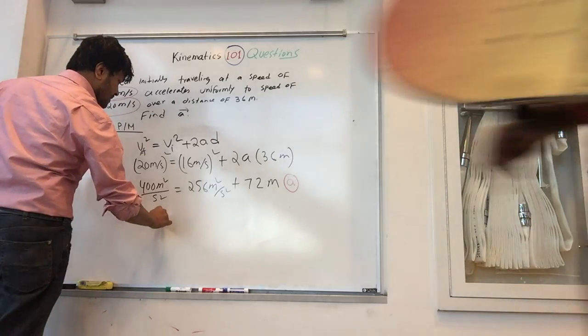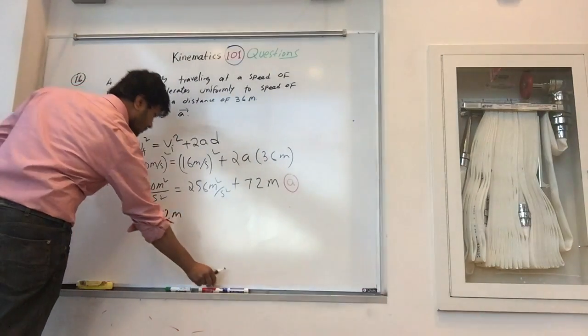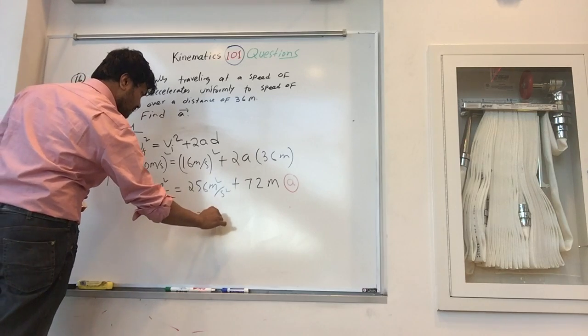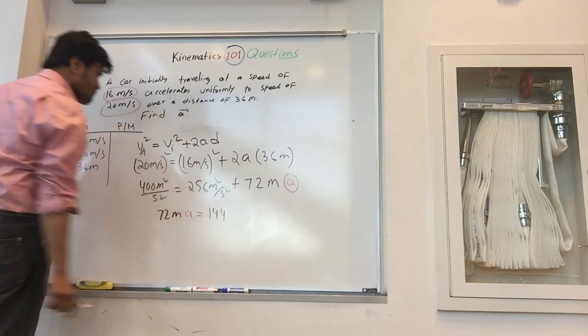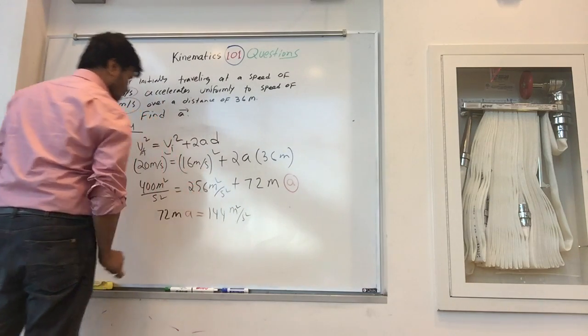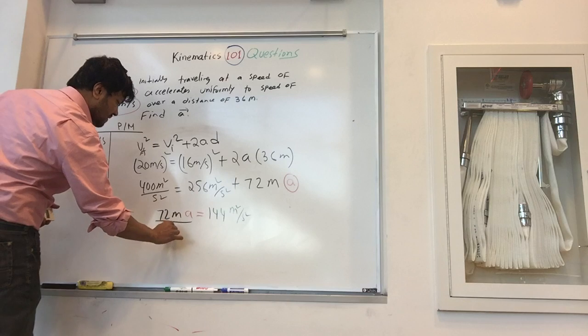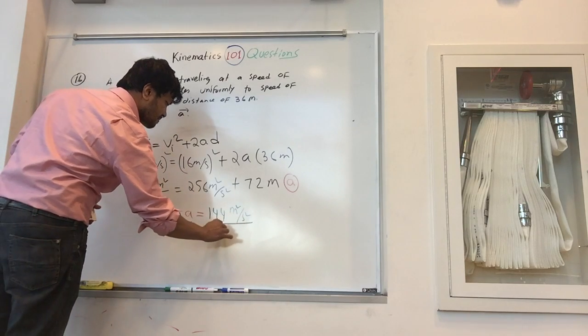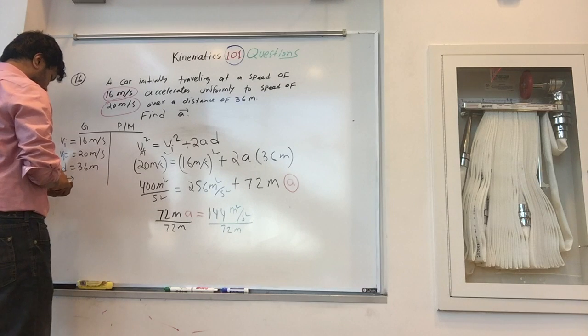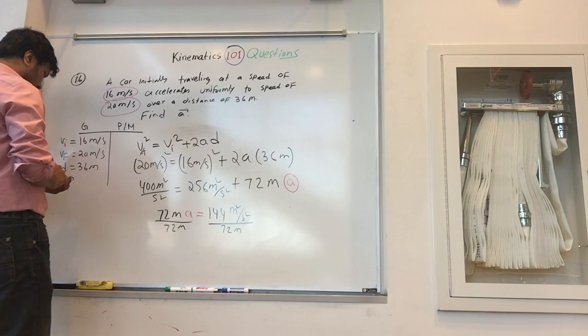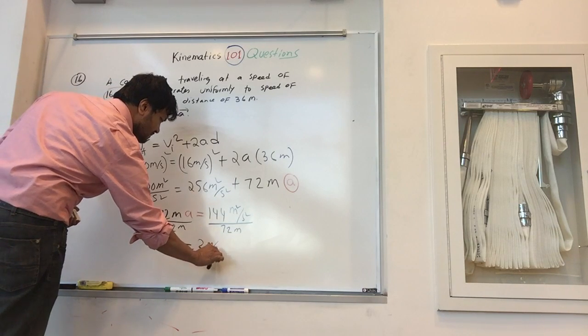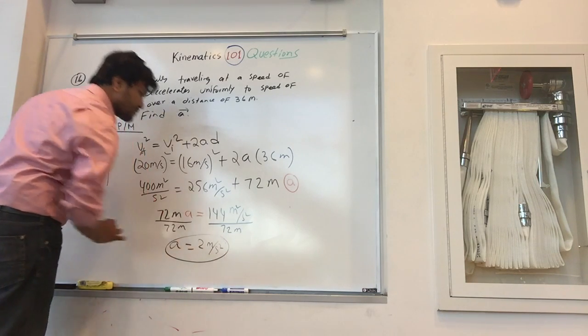So 72 meters times a, and the acceleration is equal to 144 meters squared per second squared. We're going to divide both sides by 72 meters. So the acceleration is 2 meters per second squared. Thank you.